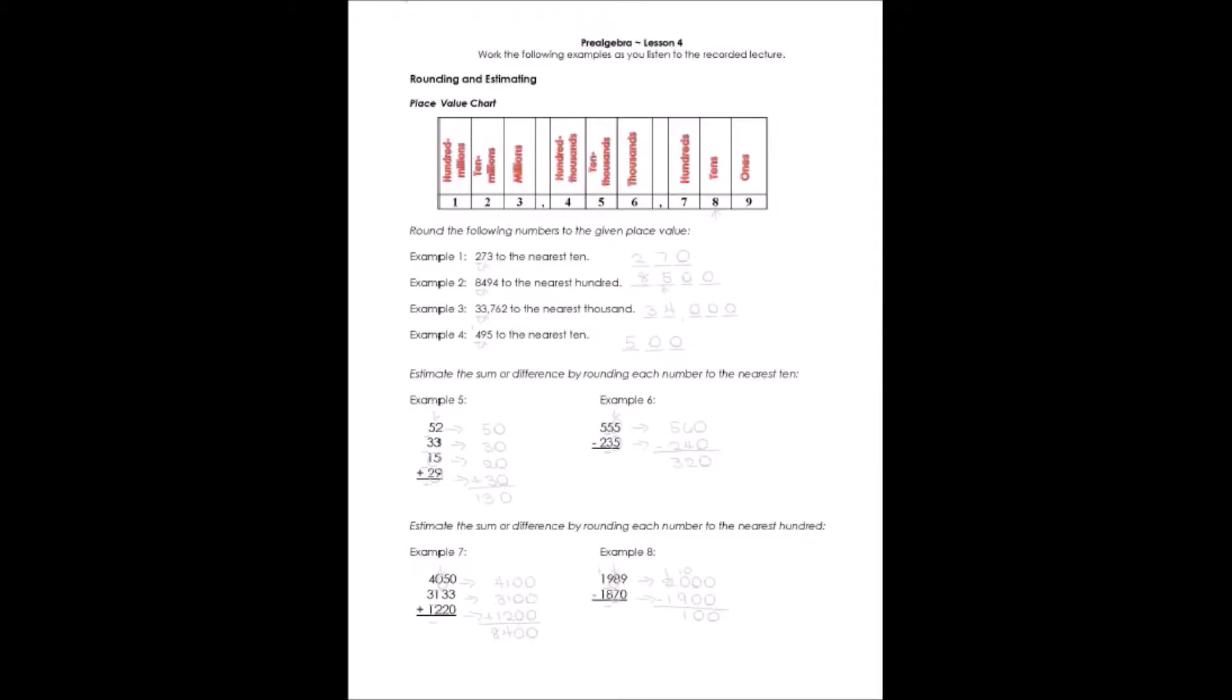So once again, I've put the place value chart for you, so if you're having trouble remembering where the place values are, there's the chart that we looked at in the beginning. Our examples tell us we're supposed to round the following numbers to the given place value. In example one, they want us to round 273 to the nearest tens place.